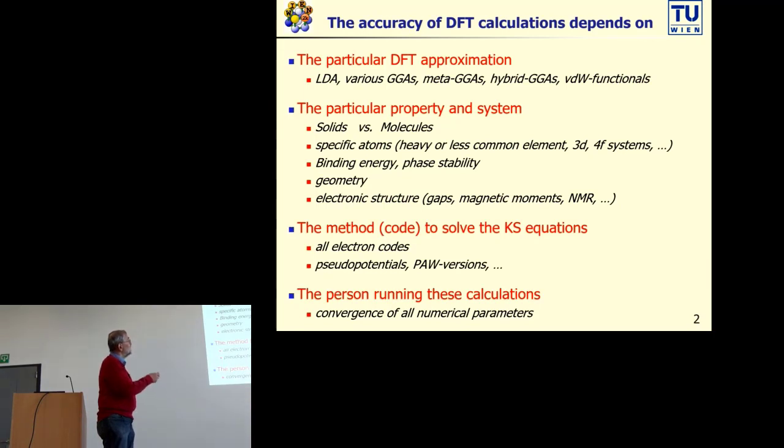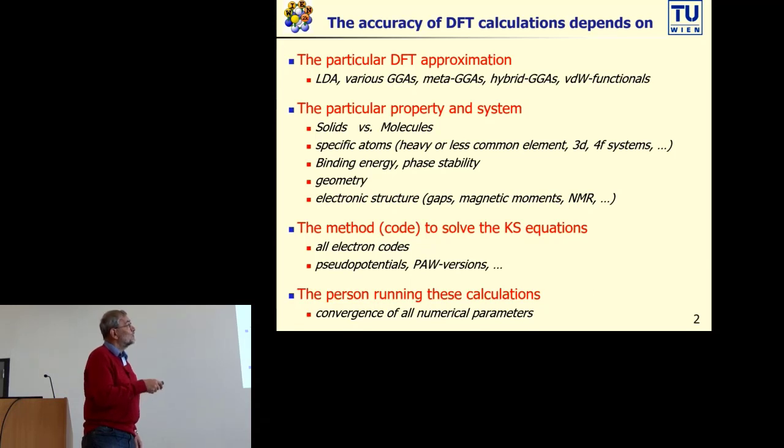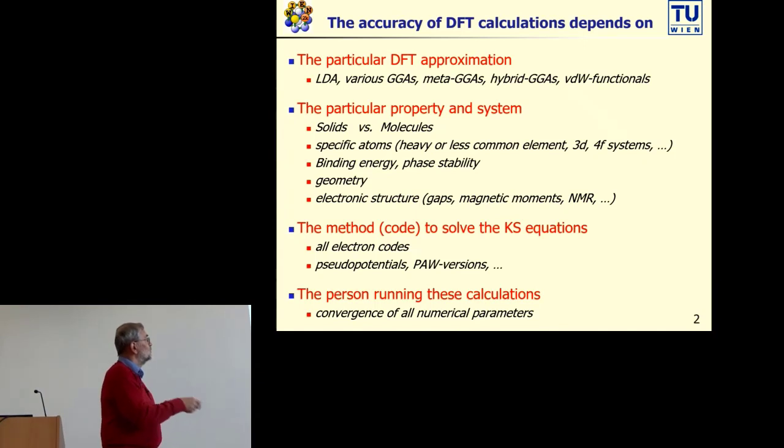So what is accuracy and how does it depend? It of course mainly depends on the particular DFT approximation you are using, depending on the property you are studying and on the system, whether it's a solid or a molecule, whether you have specific atoms. We will focus here mainly on binding energy and phase stability, but there are of course other properties which one could look at.